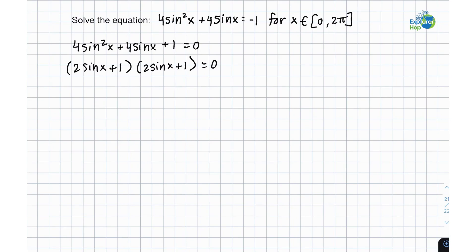So that means that 2 sine x plus 1 equals 0 will make this equation true because either one of these terms need to be equal to 0 for the entire expression to be equal to 0 since they're a product. So that means 2 sine x needs to be equal to negative 1 and sine x needs to be equal to negative 1 over 2.